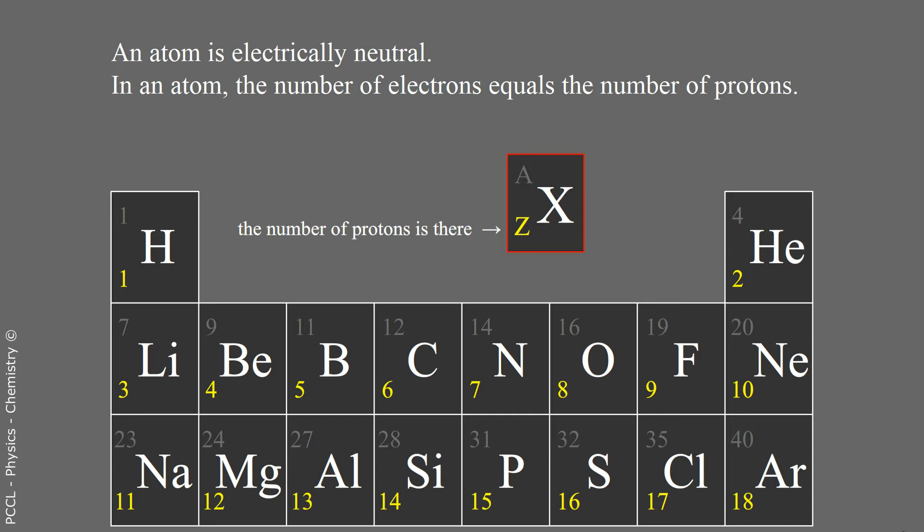To know how many electrons there are, it suffices to know how many protons there are, since in an atom there are as many. And this is written in the table. It is Z, which is the number of electric charges in the nucleus. It is called the atomic number.